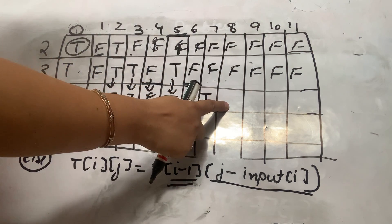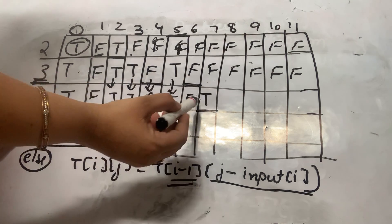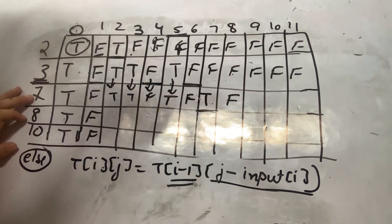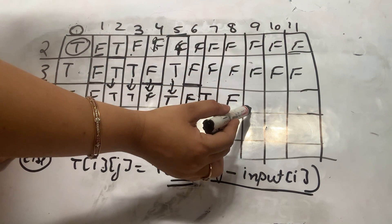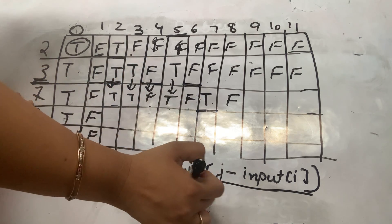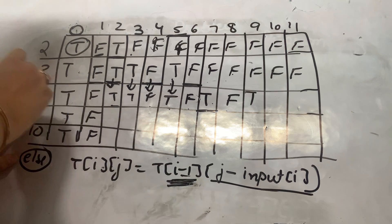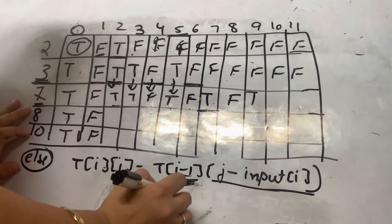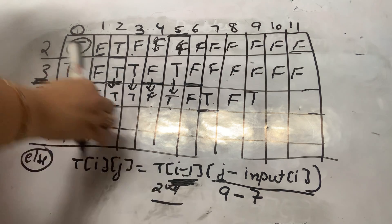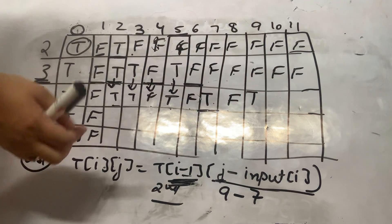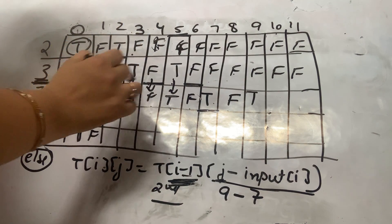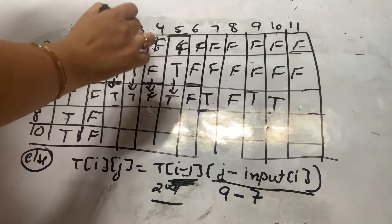For sum 8 with element 7: move back 7 places in the previous row — it's false, so this is also false. For sum 9: move back 7 places — that entry in the previous row is true, so this becomes true (2 plus 7 equals 9). For sum 10: move back 7 places — previous row entry is true, so true. For sum 11: 11 minus 7 is 4, check second row column 4 — that's false, so this is false.